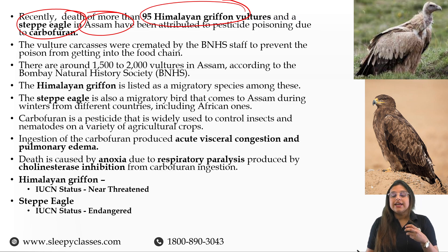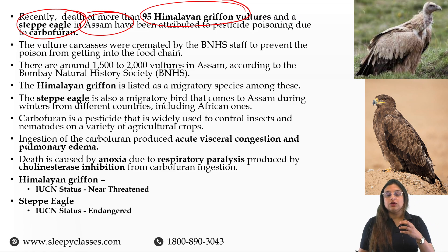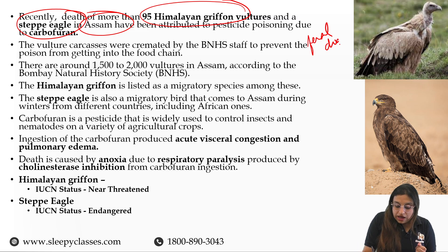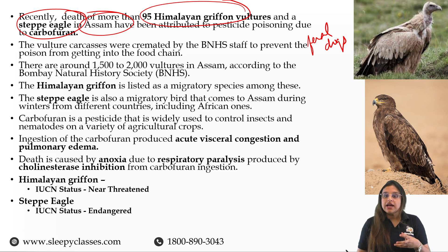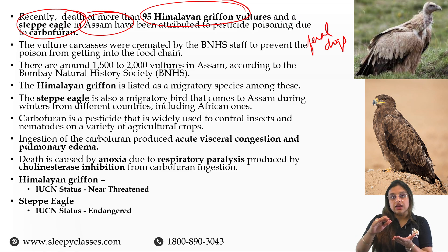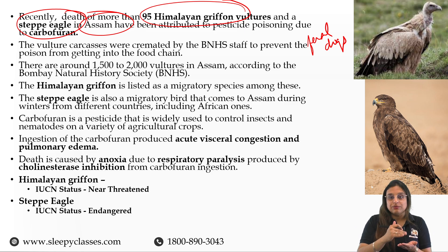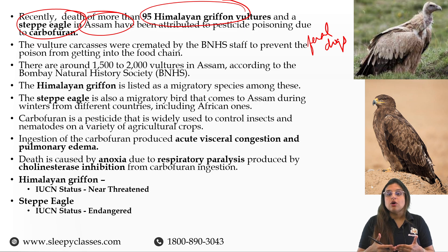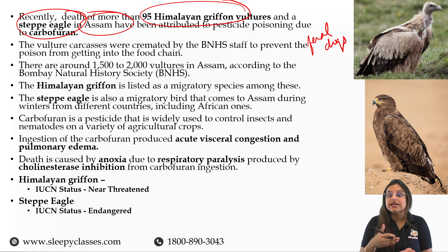What happened is that feral dogs go after the cattle of farmers. When cattle or animals are killed, farmers would spray the carcass with insecticide or Carbofuran so that if dogs feed on them, they would die. But as a consequence, vultures also fed on the poisoned carcasses and died as a result.